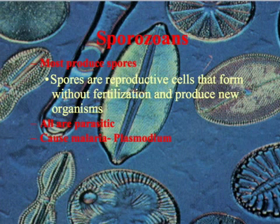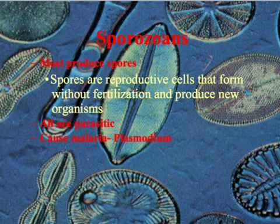The last type of protozoan is a sporozoan. Sporozoans produce spores — reproductive cells that form without fertilization and produce new organisms. They are all parasitic and actually cause malaria. An example of that would be Plasmodium.